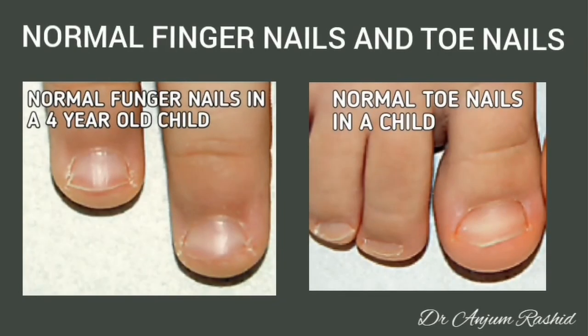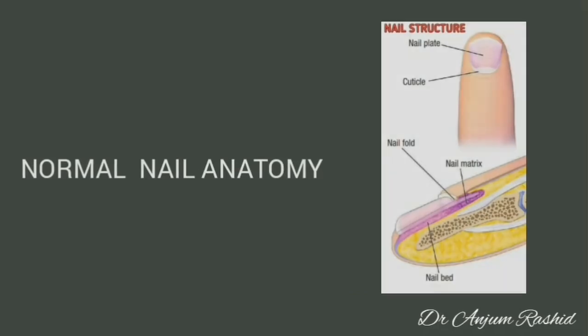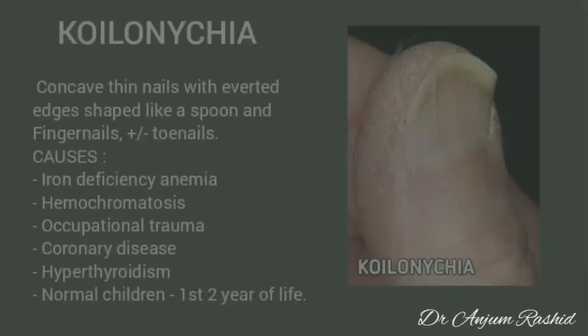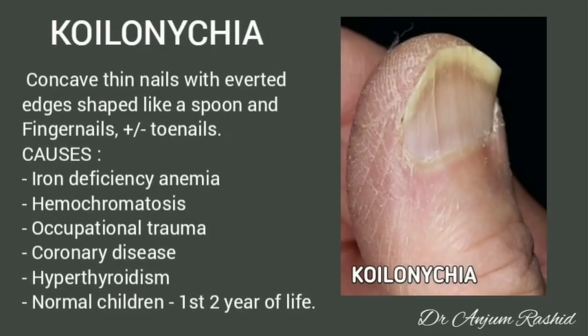These are pictures of normal fingernails and toenails in a four-year-old child. On the right side are important nail structures which include nail plate, cuticle, nail folds, nail matrix, and nail bed.